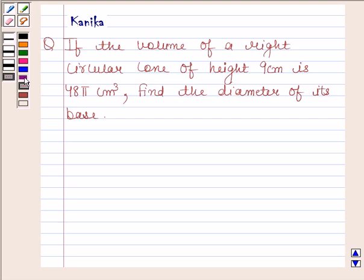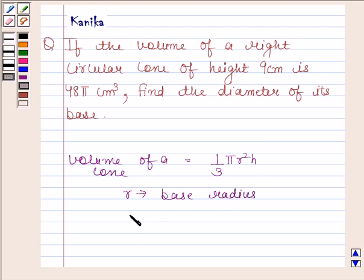we should know the formula for finding the volume of a cone. Volume of a cone is equal to 1/3 πr²h, where r is the base radius and h is the height of the cone.